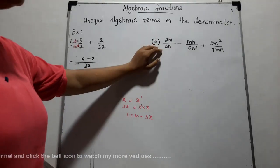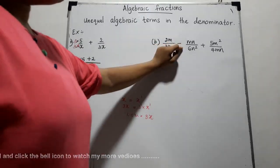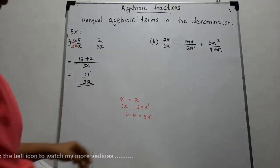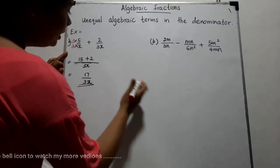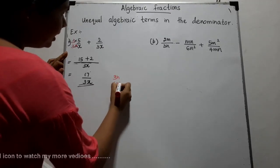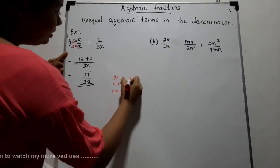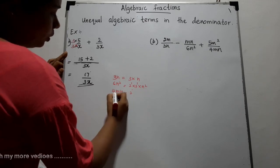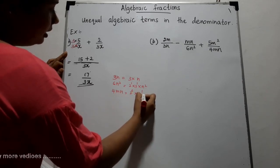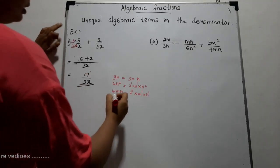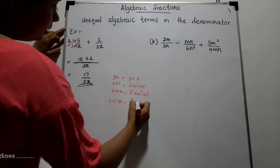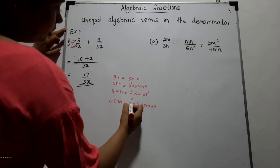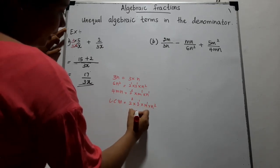Now let's see another example. We have to obtain the LCM of 3N, 6N squared, and 4MN. Factorizing: 3N is 3 times N; 6N squared is 2 times 3 times N squared; 4MN is 2 squared times M to the power 1 times N to the power 1. The LCM is 2 squared times 3 times M times N squared, which equals 4 times 3 times MN squared = 12MN squared.